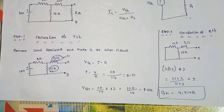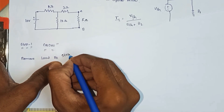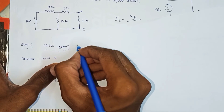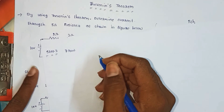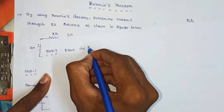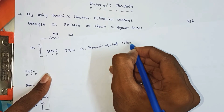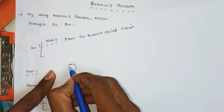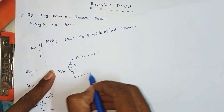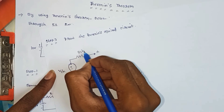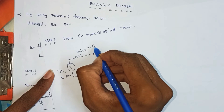So VTH equals 8.57 volts and RTH equals 4.714 ohms. Step 3: draw the Thevenin equivalent circuit. The equivalent circuit consists of VTH (8.57 V) in series with RTH (4.714 ohms) between terminals A and B.